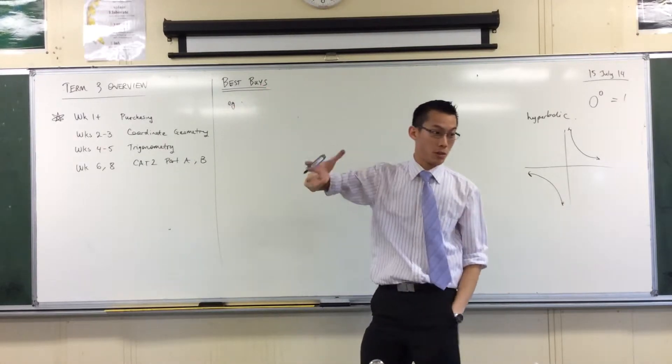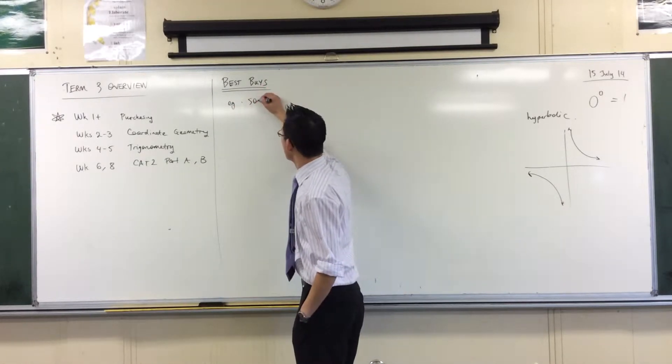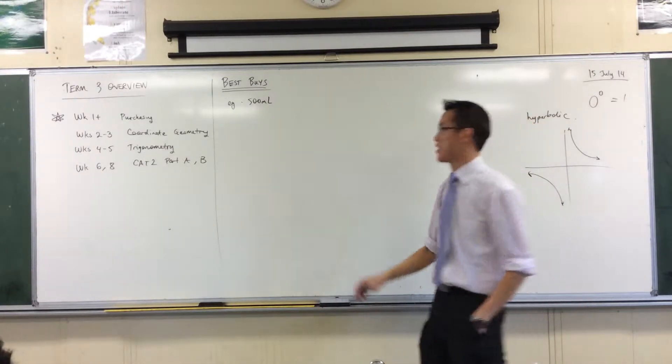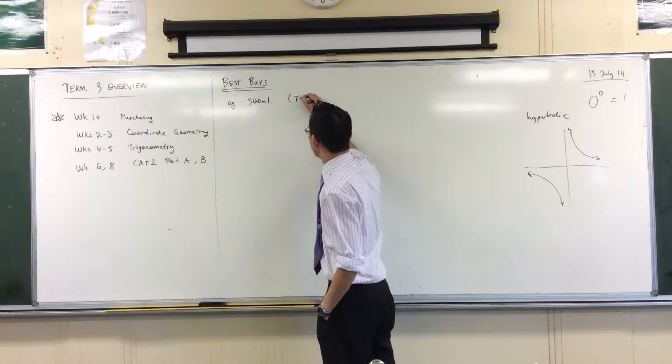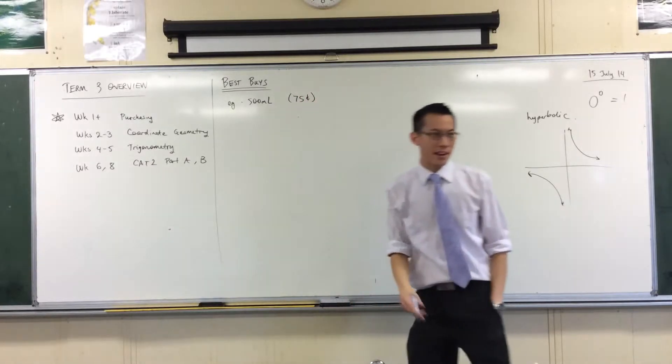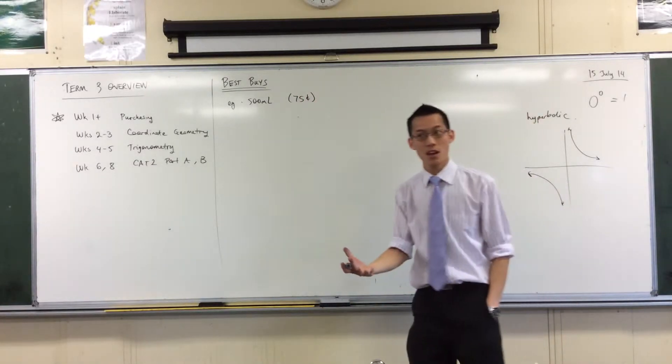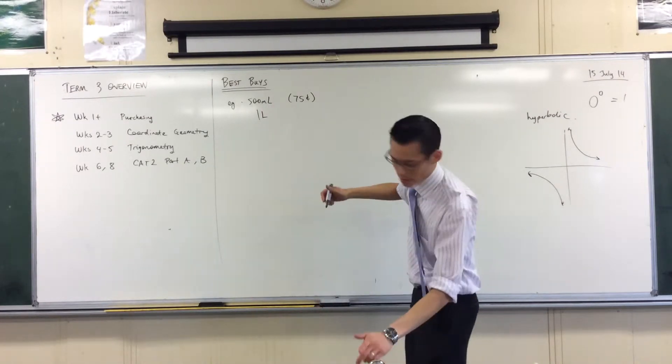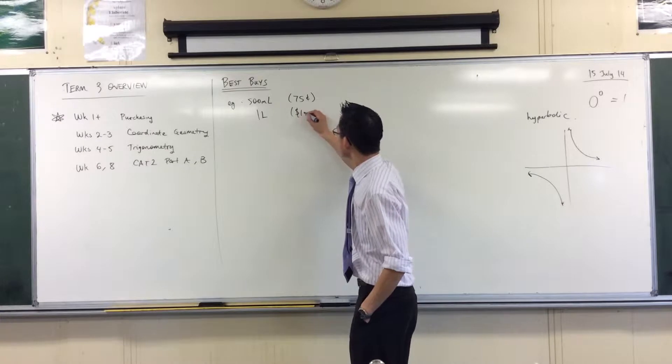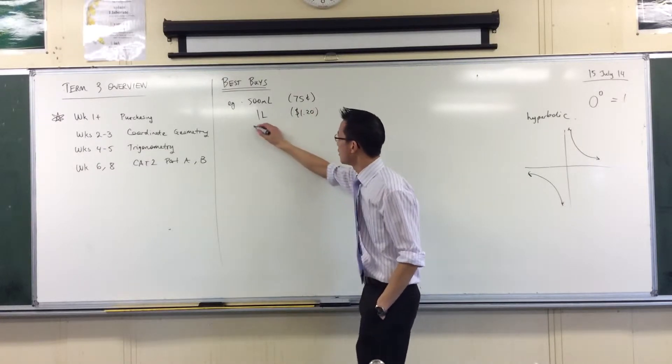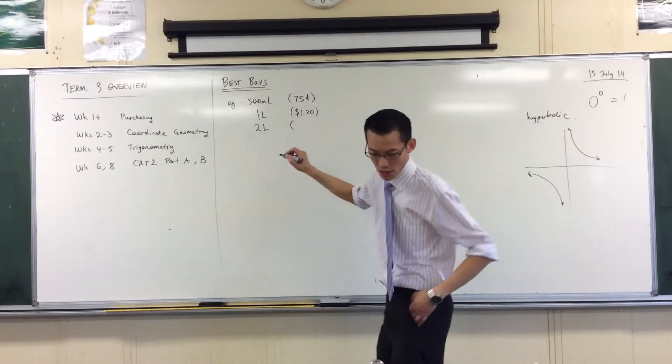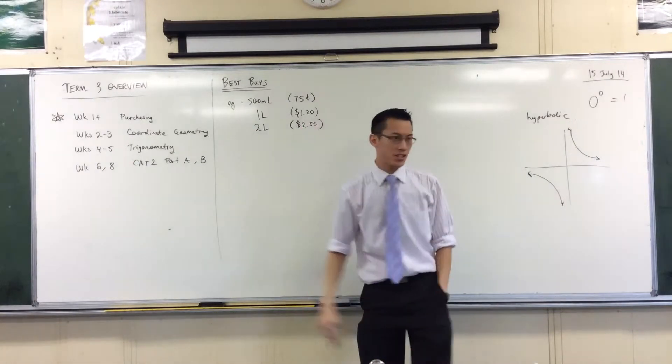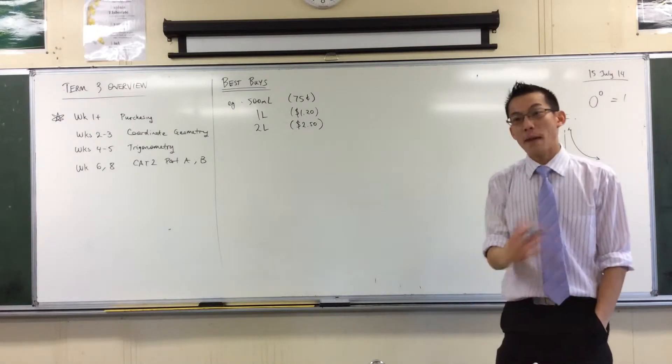This is the example, maybe you want to follow along with me. You got your 500ml bottle and they're gonna charge us 75 cents. But there's the other sizes which they'll charge different amounts for. You got your one liter, which is $1.20, and then you've got your two liter bottle, which is $2.50.